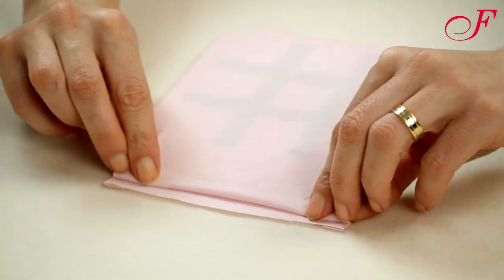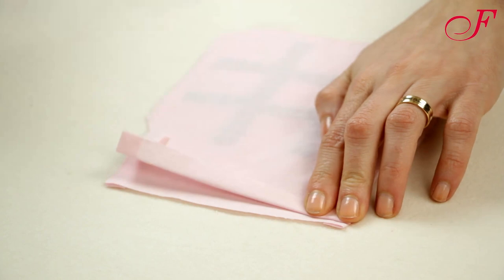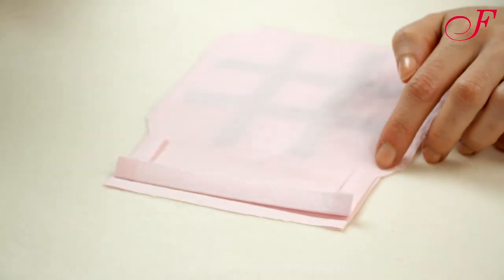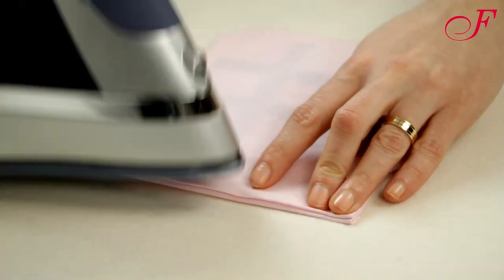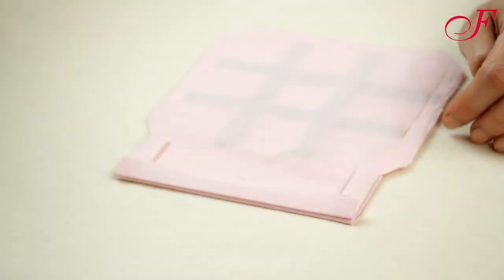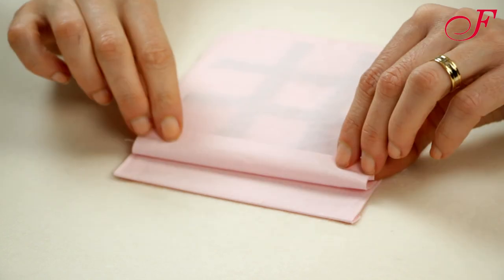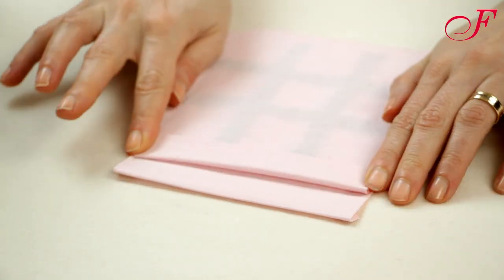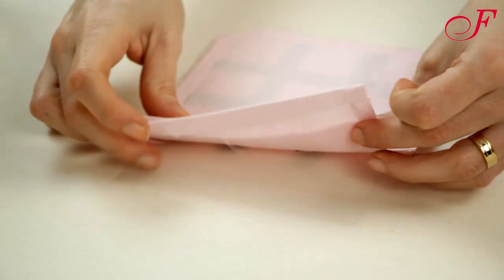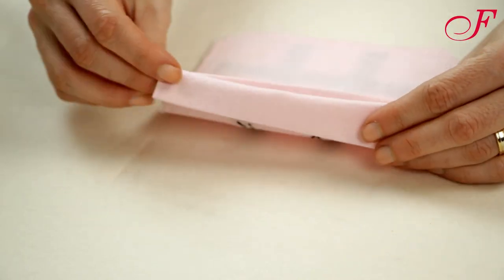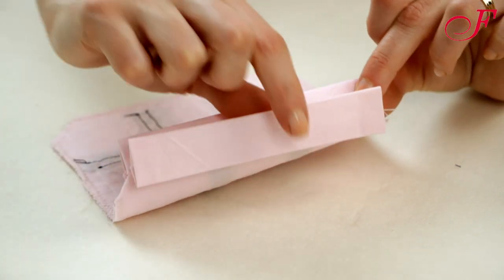Again, using your iron, fold and press the top edge down 1 cm. Then again 2 cm. Stitch close to the folded edge.